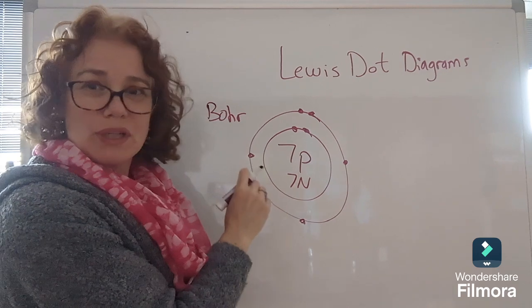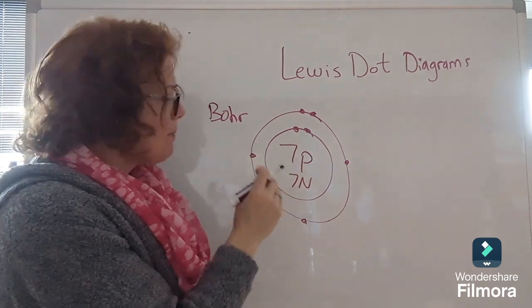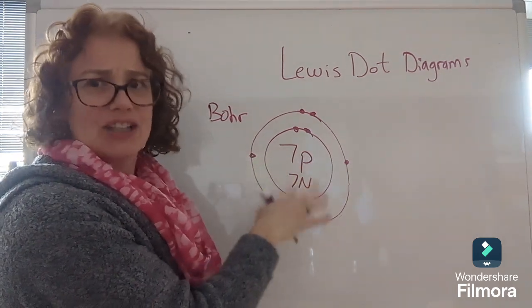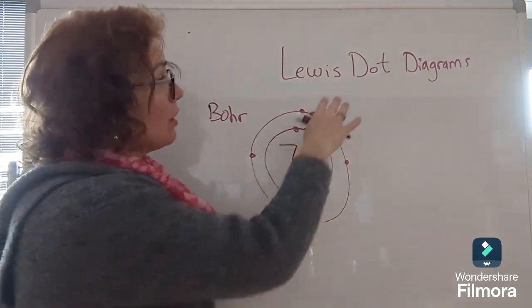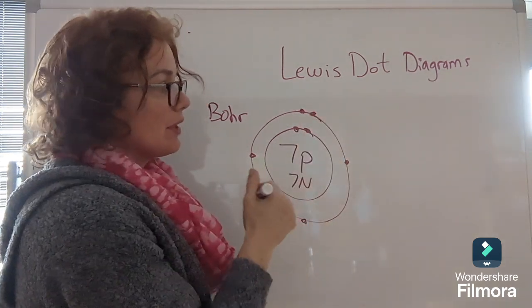We know that this only works through element 18 because the electrons don't actually go around the nucleus like little planets going around the sun. The Lewis dot diagram is simpler.